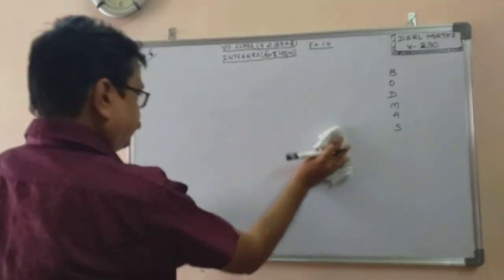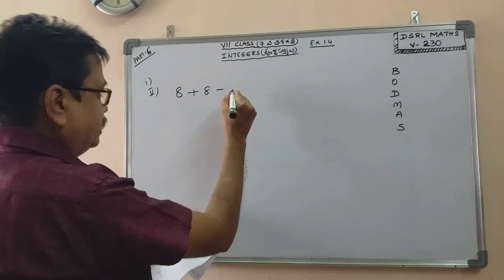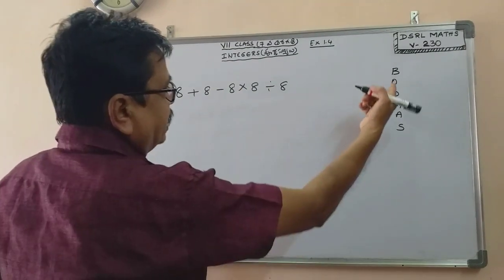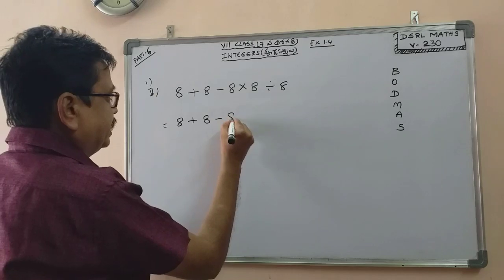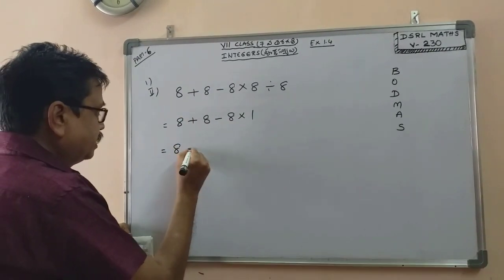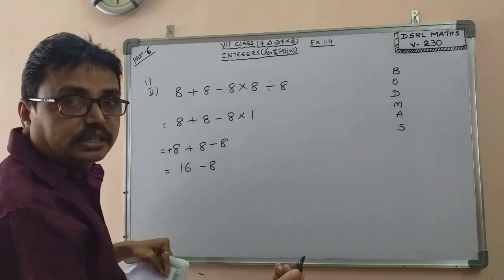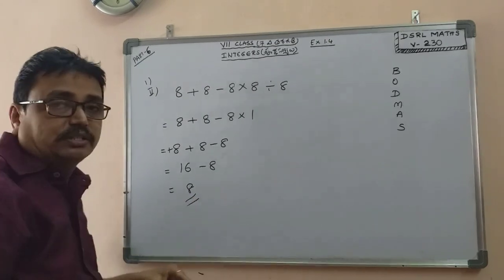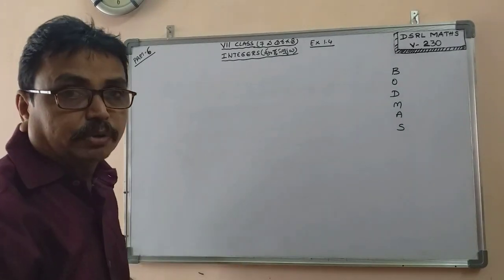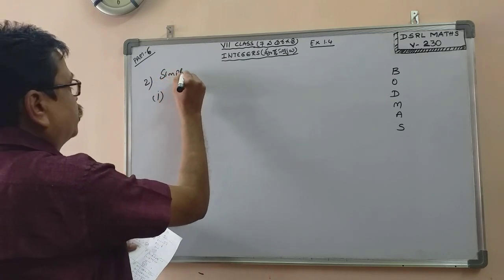The answer is 8. Next example: 8 plus 8 minus 8 into 8 divided by 8. First division, then multiplication. The result gives us 8. This is the first and second row of the fifth exercise — a simple simplification using the BODMAS rule.